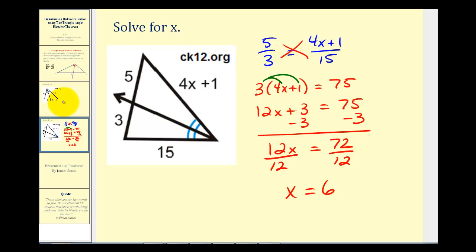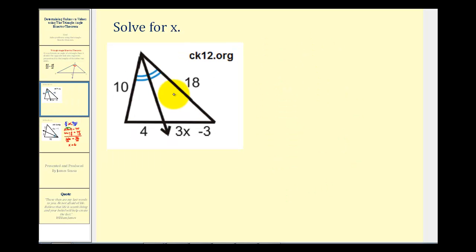Let's go ahead and take a look at one more example. Again we have the same situation. We have an angle bisector of this angle here. So it divides this side of the triangle so it is proportional to the other two sides of the triangle. So the ratio of 4 to 3X minus 3 must equal the ratio of 10 to 18.